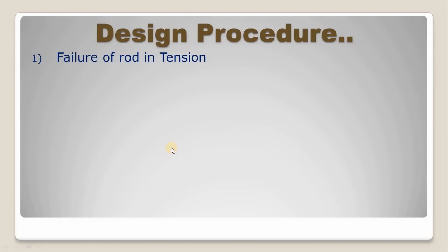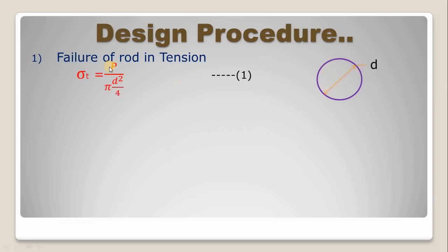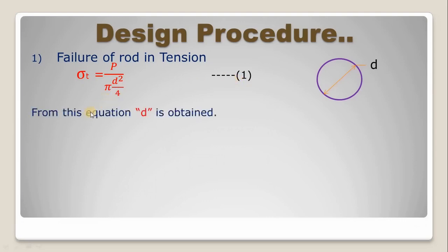The first step of the design procedure is failure of rod in tension. Consider rod diameter small d. The area will become pi by 4 d squared. The tensile stress is given by sigma t equal to P divided by pi by 4 d squared — equation number 1. From this equation, we can calculate the diameter of rod d.